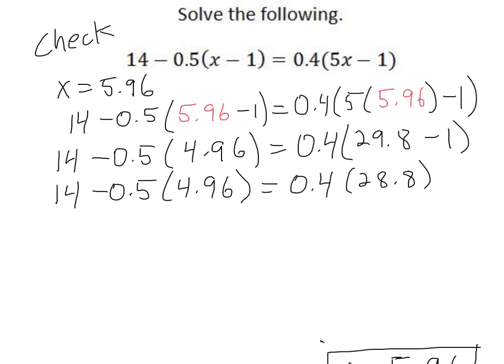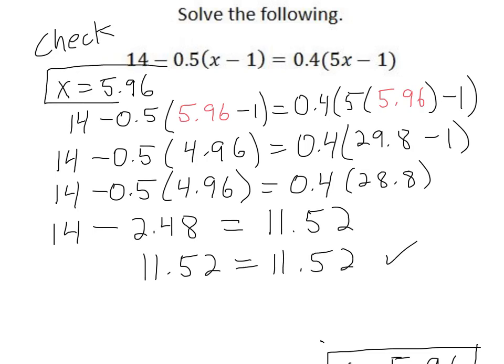Now we do the multiplications so we have 14 minus 0.5 times 4.96 which is 2.48, and that would equal 0.4 times 28.8 which is 11.52. And finally 14 minus 2.48 is 11.52 and in this way we have verified our answer and we know for a fact that x equals 5.96 on this equation.